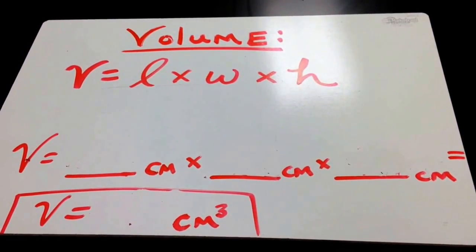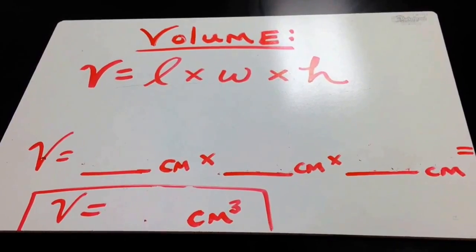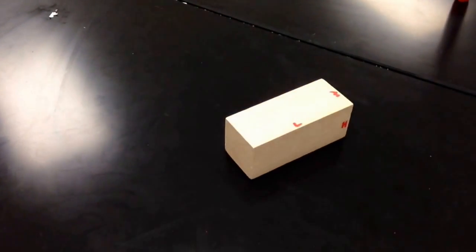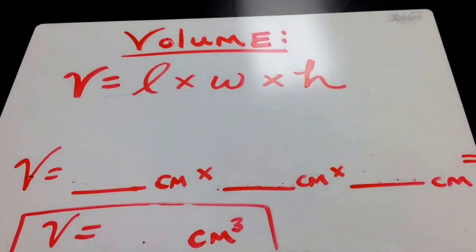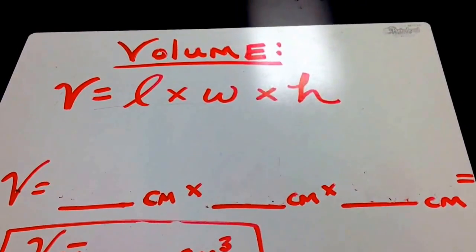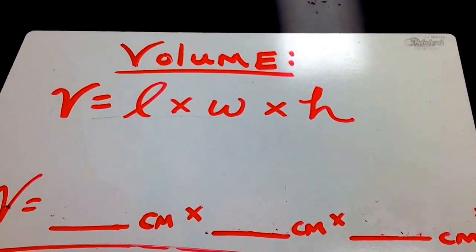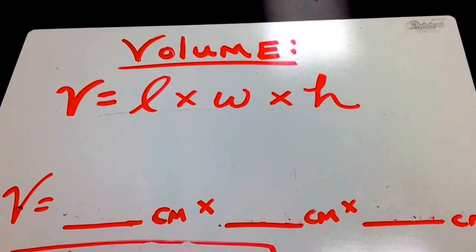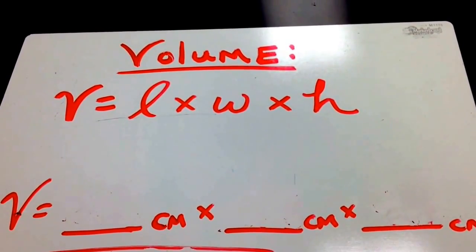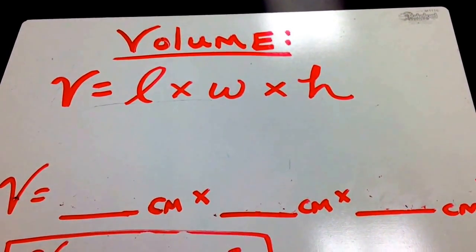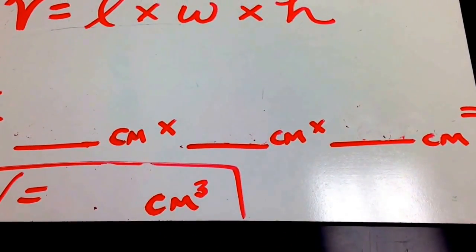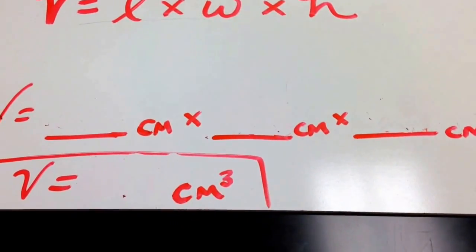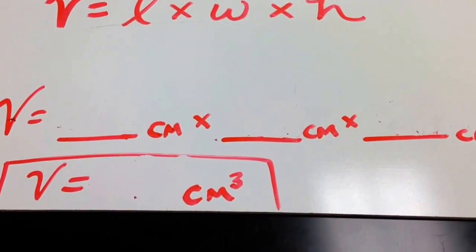When measuring the volume of a regularly shaped object, such as a block of wood, you may simply measure the length multiplied by the width and multiplied by the height. We're using the mathematical equation volume equals length times width times height, and the units will be measured in centimeters for a final unit of cubic centimeters.